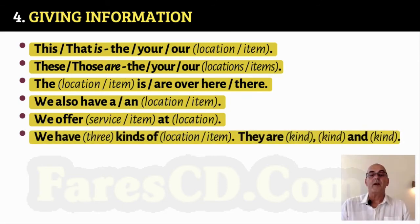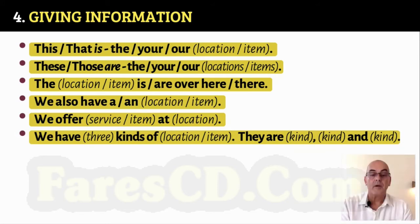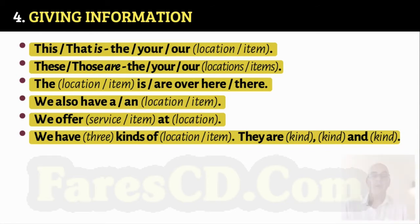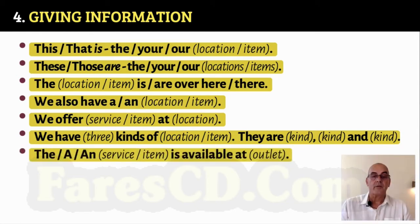We have three kinds of location or item. They are kind, kind, and kind. For example: We have three kinds of accounts — they are current, savings, and deposit. The service or item is available at the outlet. For example: The travel desk is available at the lobby.